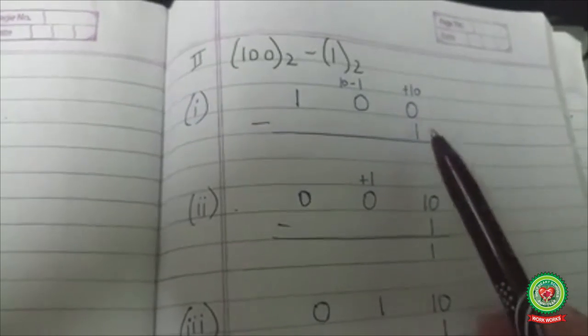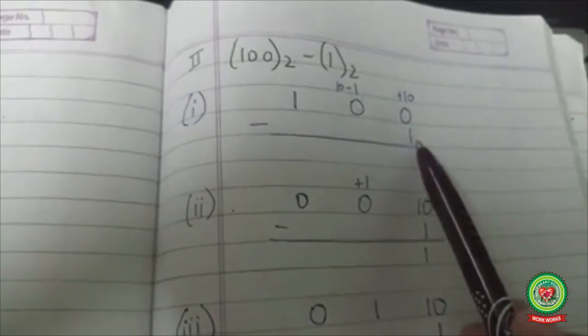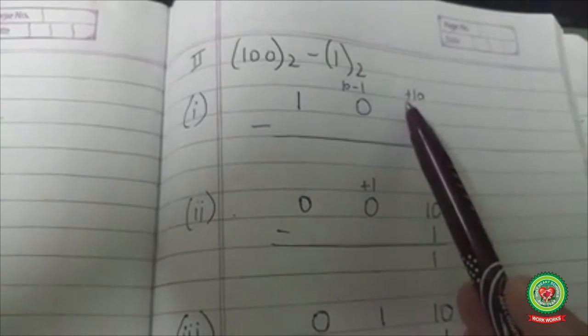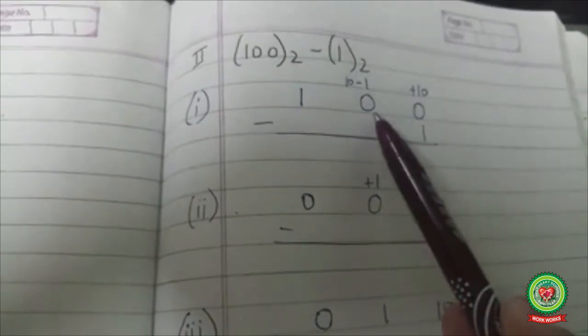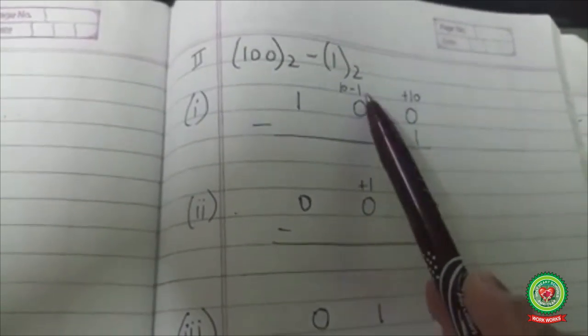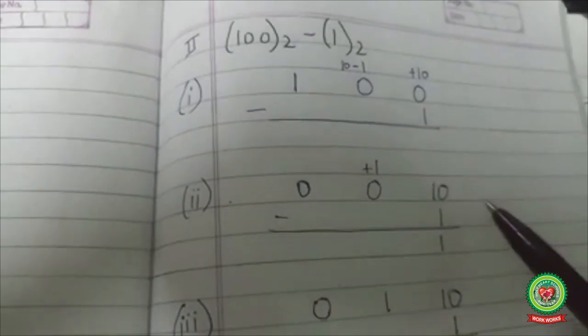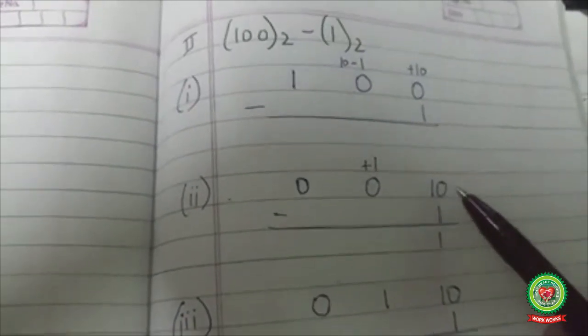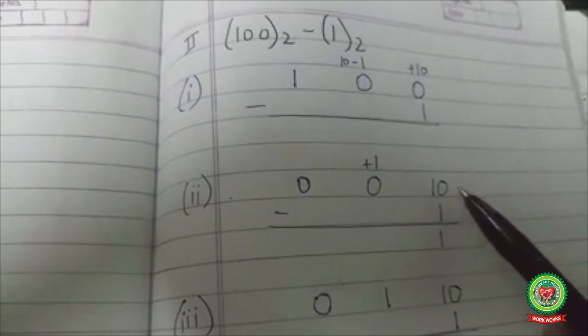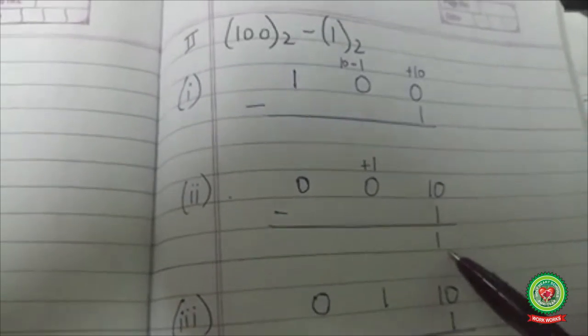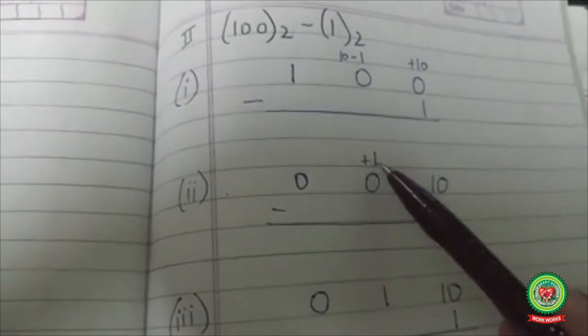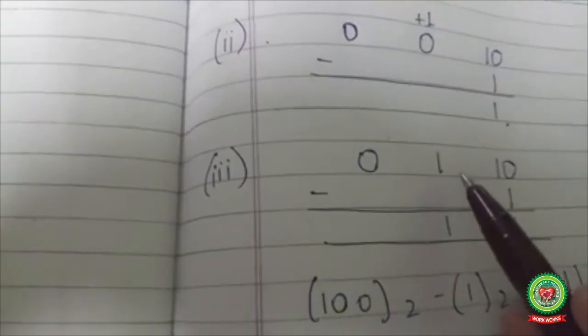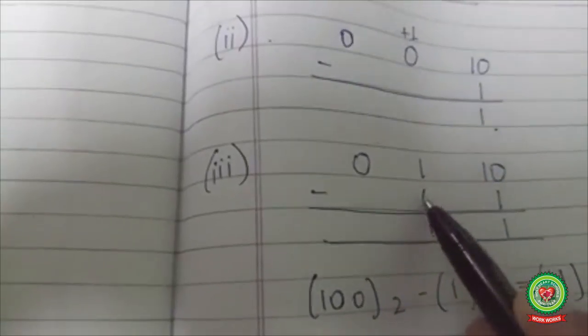Here 0 minus 1 is not possible, so I have to add 10, and here I will be deducting minus 1. Now the number becomes 10. 10 minus 1 means 0 minus 1 is 1, and here it has become 1. So 1 minus 0 is 1. So the answer is 11.